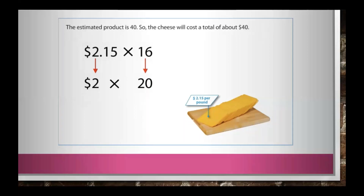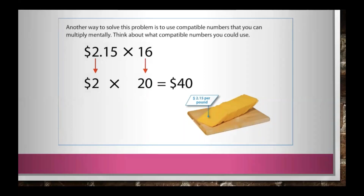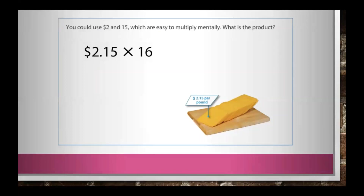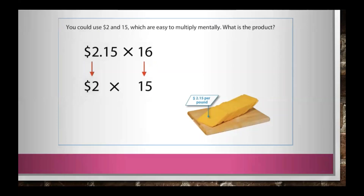The estimated product is 40, so the cheese will cost a total of about $40.00. Another way to solve this problem is to use compatible numbers that you can multiply mentally. You could use $2.00 and $15.00, which are easy to multiply mentally. What is the product?